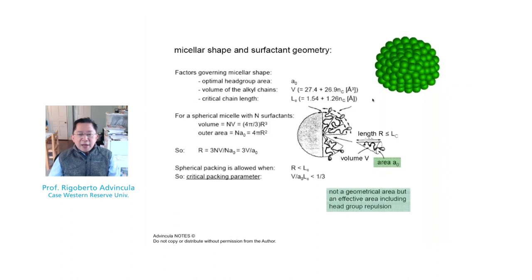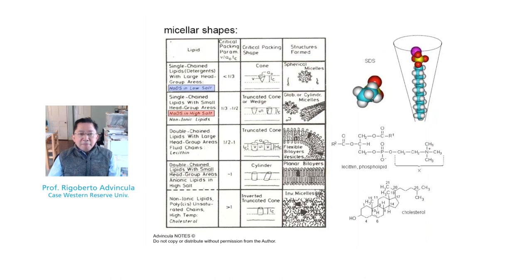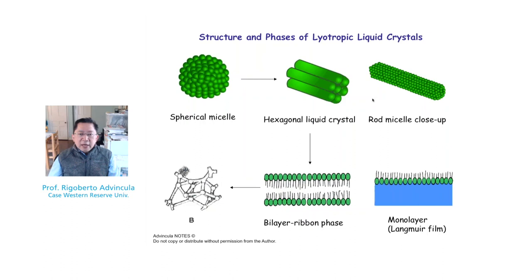The micellar shape and surfactant geometry can be defined by the size of the head group, the volume of the tail chain, and a critical chain length. By understanding the critical packing parameter, you can predict micelle and vesicle behavior. A critical packing parameter of one-third or less forms spherical micelles; between one-third and one-half forms cylindrical micelles; between one-half and one forms vesicles; greater than one forms inverted micelles. These different lyotropic liquid crystalline phases play an important role in changing both surface tension and viscoelastic behavior of the host liquid.